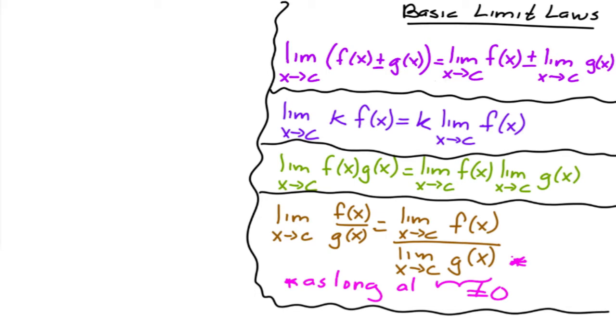The first one just says that if you're taking the limit of a sum, you can break it up into the sum of the individual limits.